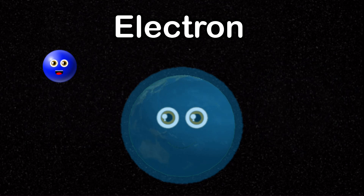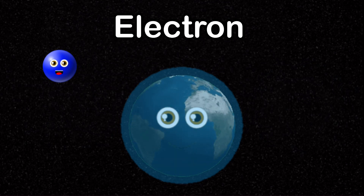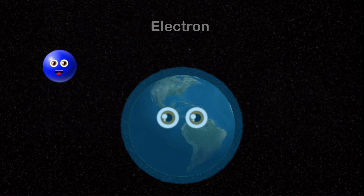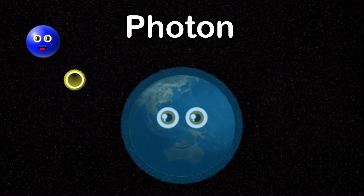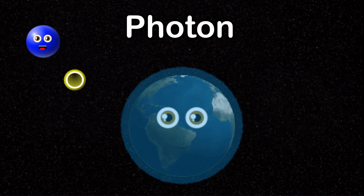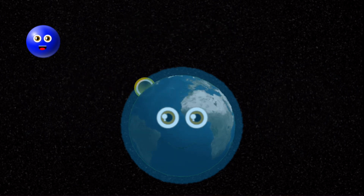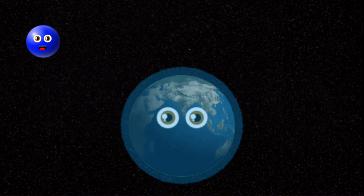I'm an electron and I'm about to reach the earth's north pole — falling from high energy to normal energy. When I reach this normal energy, I produce a photon. This is where things get interesting.